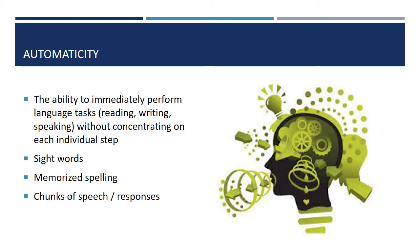Students at any level have a shared goal of developing what's known as automaticity — the ability to perform language tasks without having to concentrate on each individual step. Think of it as dancing by just feeling the music and not struggling to remember each individual step or movement. Students who are mastering reading might develop automaticity with sight words, being able to look at a short word and know what it says and what it means quickly without laboring over it.